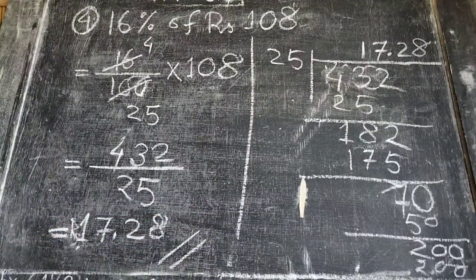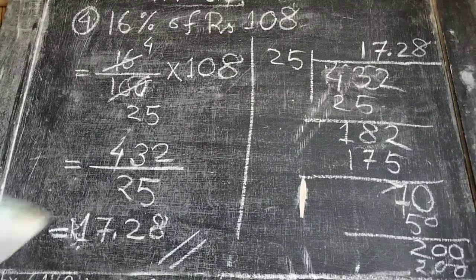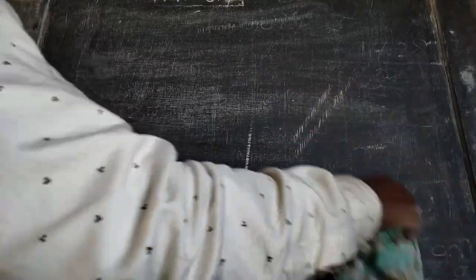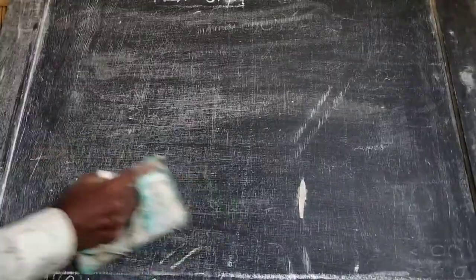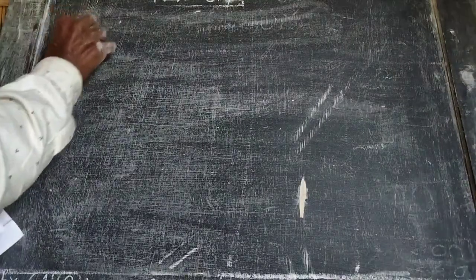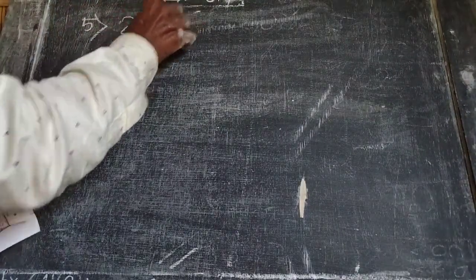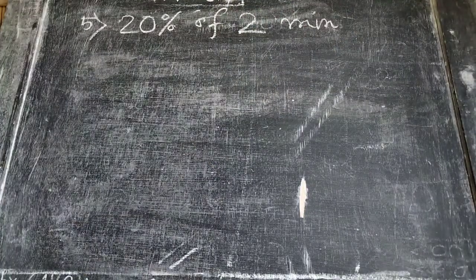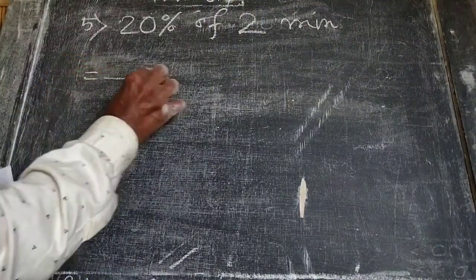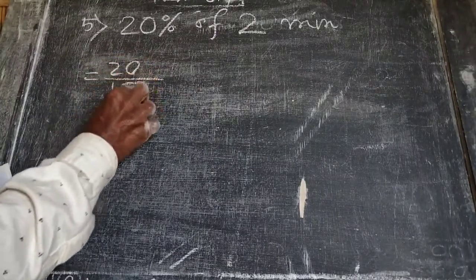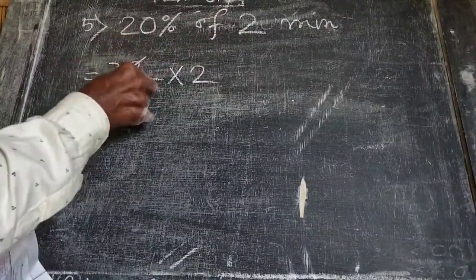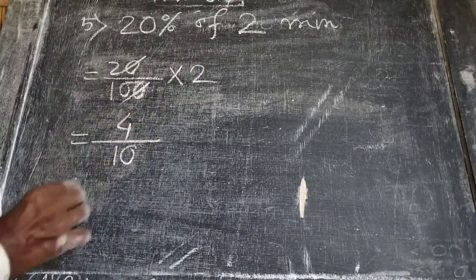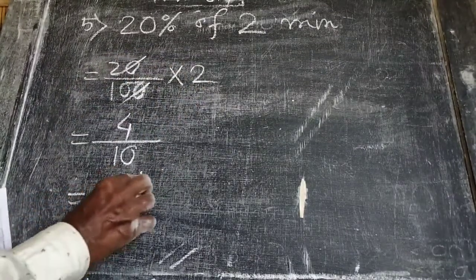Next, (5) 20 percent of 2 minutes: we write 20 by 100 into 2. After cancelling, we get 20 by 10, which is 2, giving 0.4 minutes.